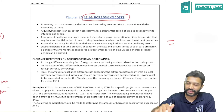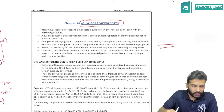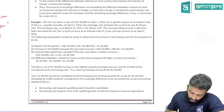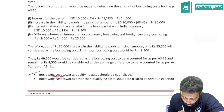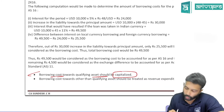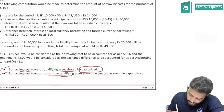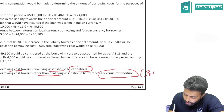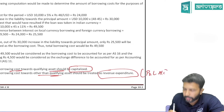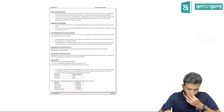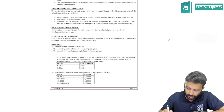To summarize: if you incurred any borrowing cost towards a qualifying asset, it will be capitalized. Other borrowing cost will be treated as revenue expenditure, meaning it will be transferred to P&L. This is the treatment.